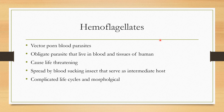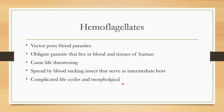Hemoflagellates are obligate parasites that live in the blood and tissue of human hosts, causing life-threatening infections. They are spread in specific tropical regions by blood-sucking insects that serve as vectors, and they have a complicated life cycle and morphology.